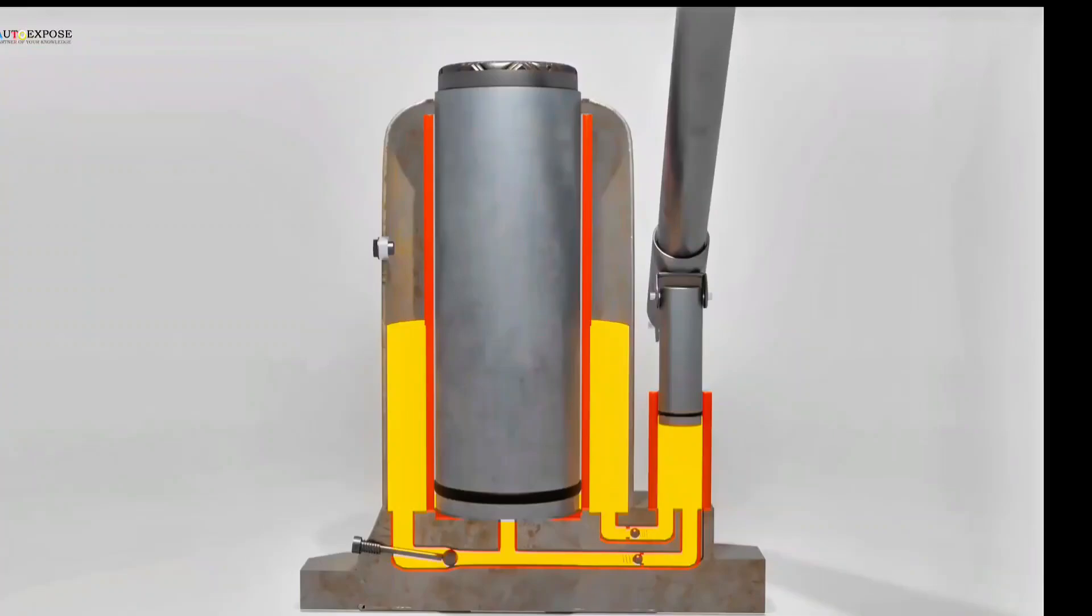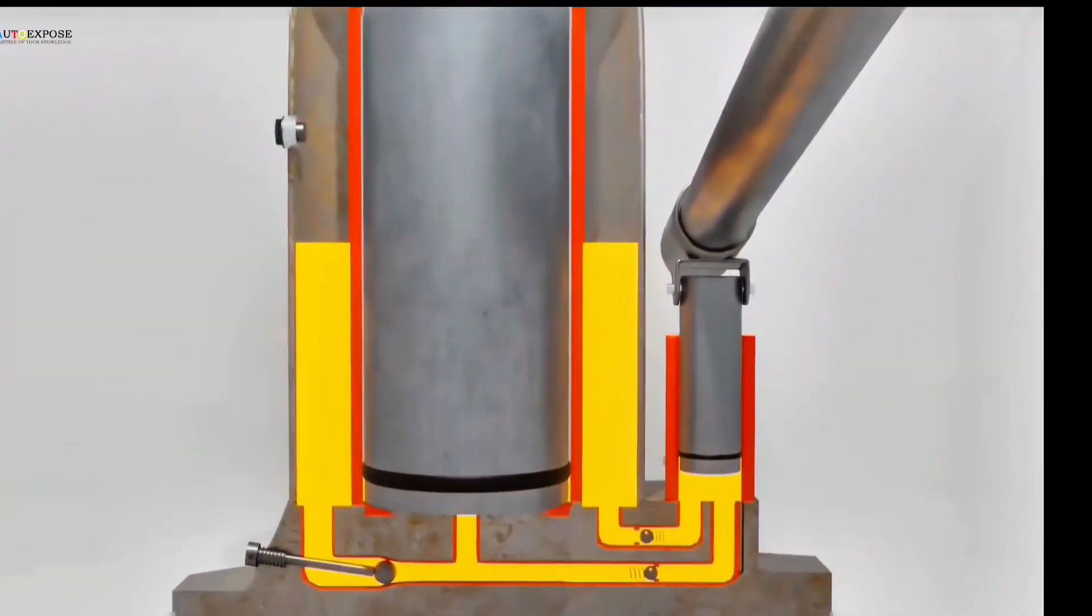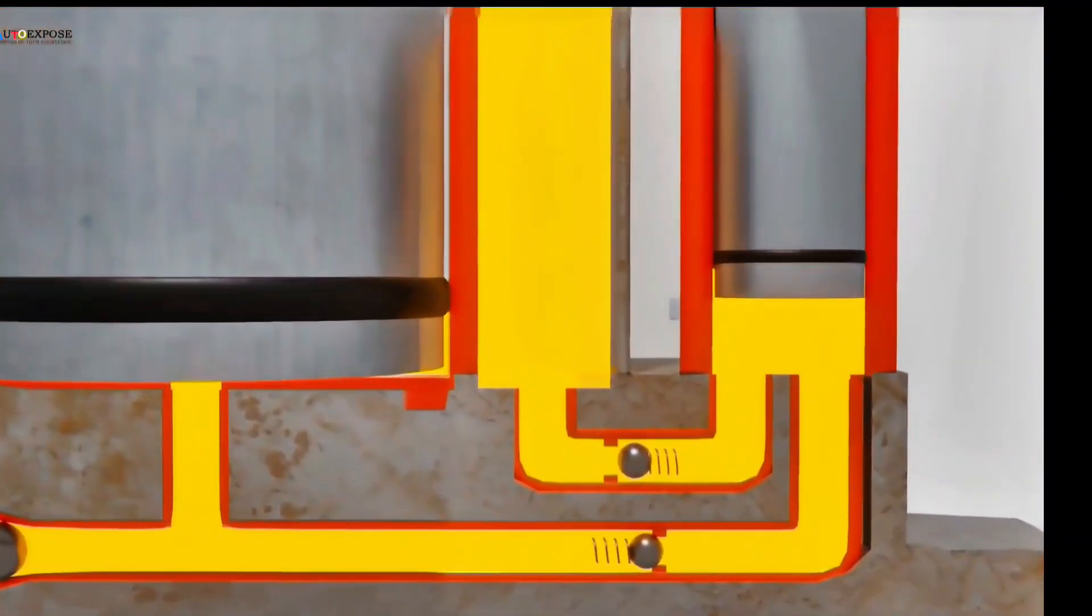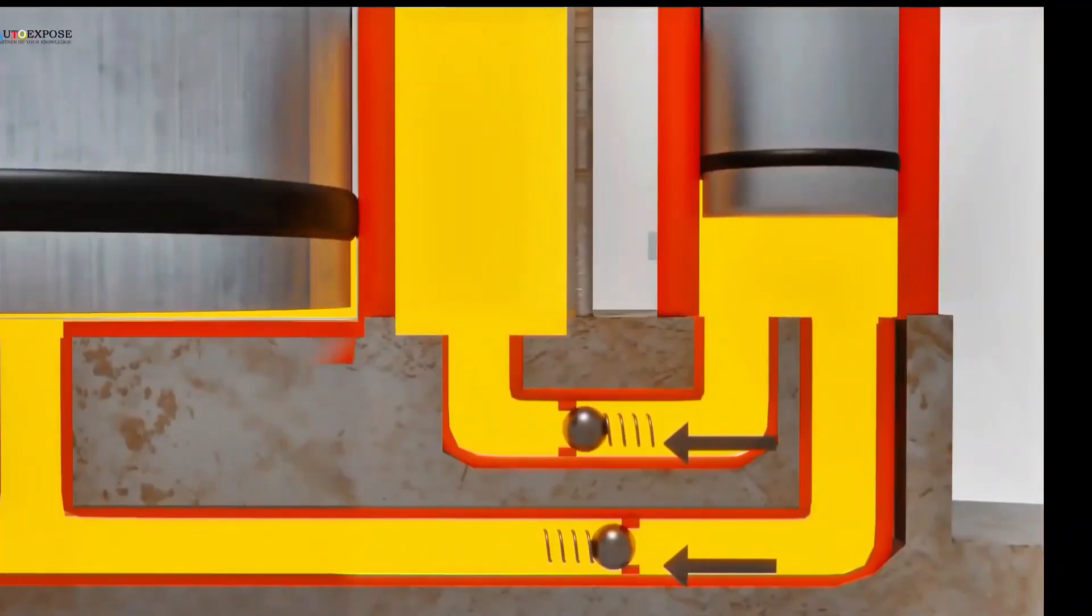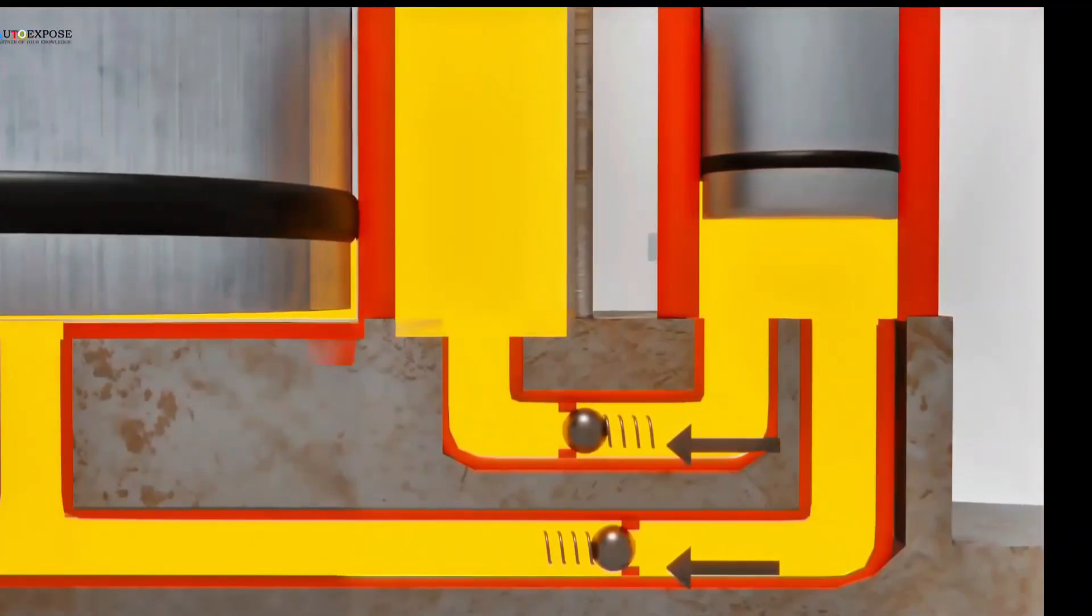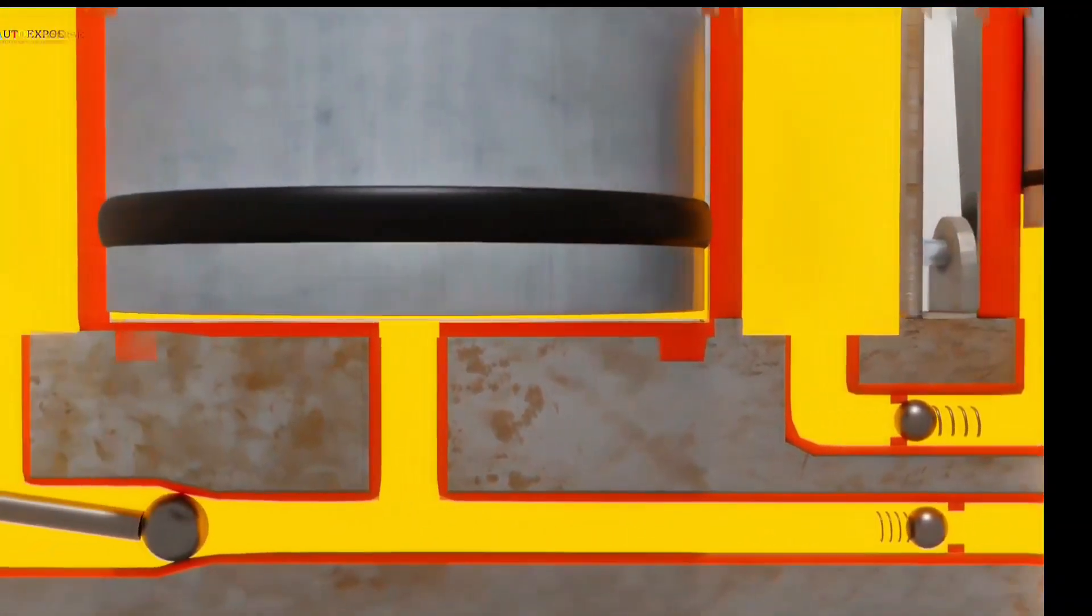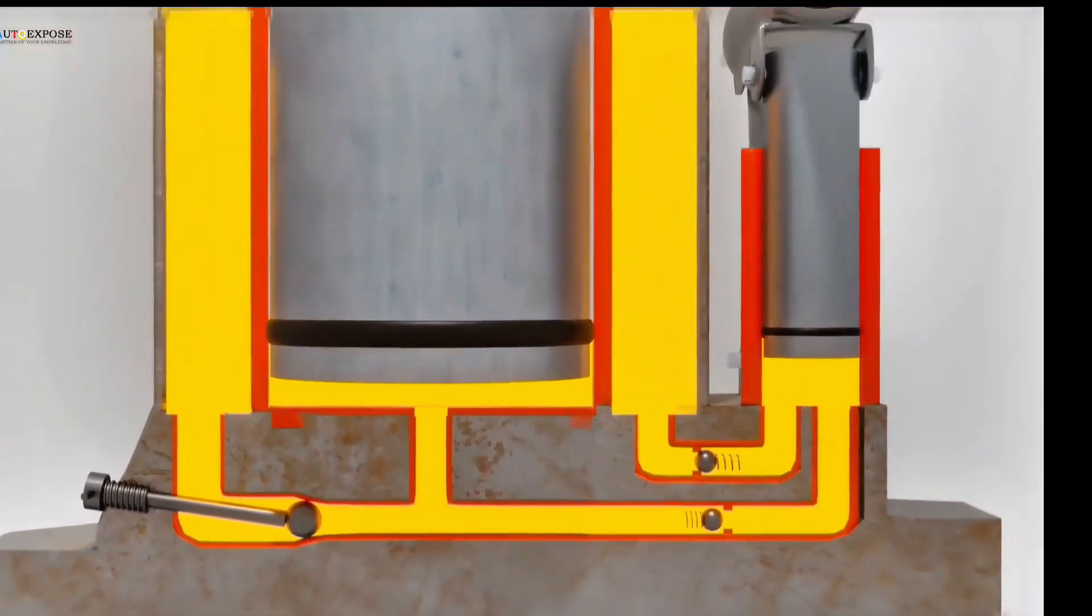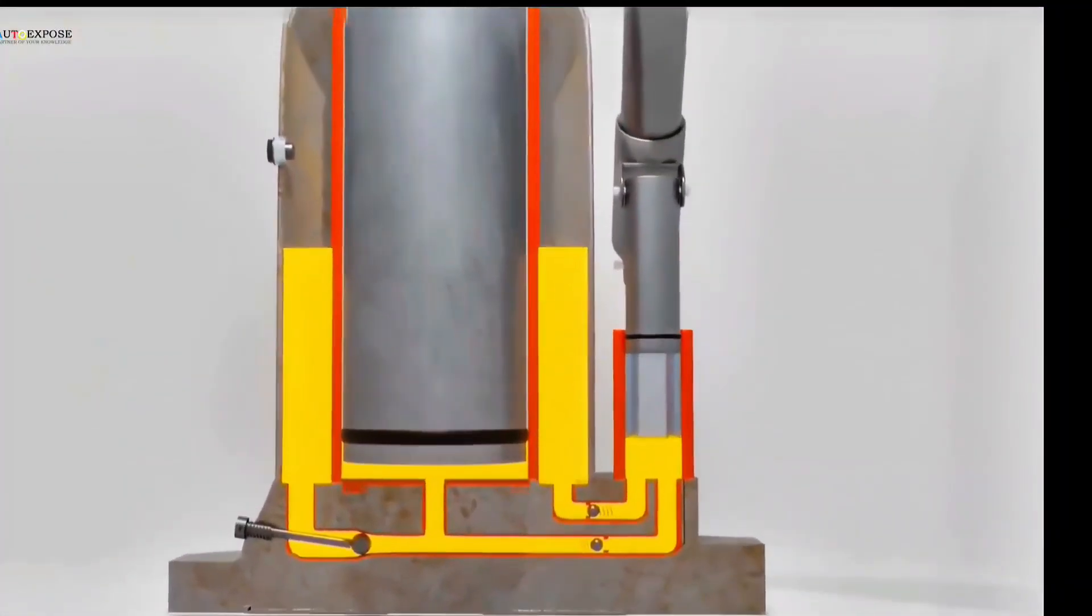When we press the input piston, it reduces the volume in the input cylinder, increasing the pressure. This increased pressure pushes fluid through both channels. This time, the reservoir valve closes tightly when pressurized, while the output valve opens when pressurized. This causes fluid to be pumped entirely into the output cylinder. The increased fluid volume in the output cylinder pushes the piston, causing it to move upward.